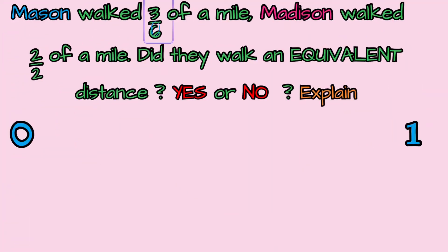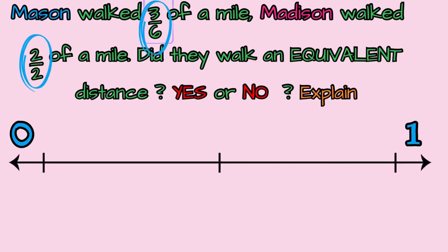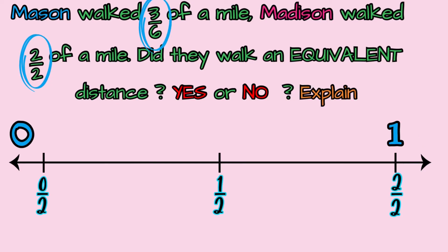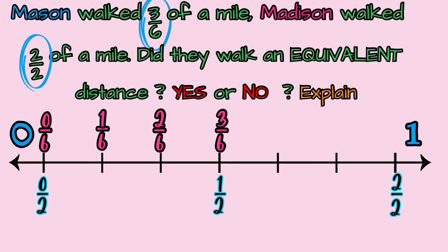Superpowers! We're going to work on a problem! This problem says that Mason walked three-sixths of a mile and Madison walked two-halves of a mile. Did they walk the same distance? Yes or no? And we have to explain our answer. This activity gets harder because we're going to be finding the equivalent fractions on the same number line, which could make everyone confused. The problem is asking us if they walked an equivalent distance, so we have to find the fractions on the number line and see if they are equivalent.